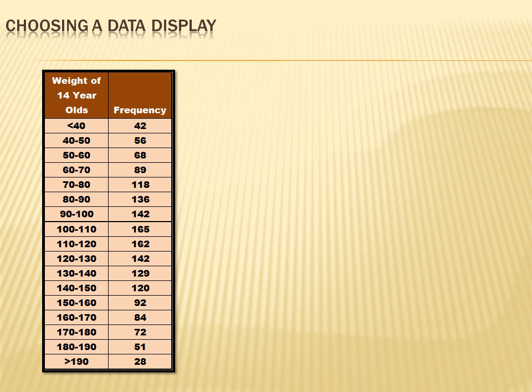Let's take an example. I've got a table that shows the weights of 14-year-old kids. On the left is a range of weights and on the right is the number of people surveyed who fell within those ranges. We could probably summarize this information in a variety of data displays. Let's look at a couple and see what seems to make sense.